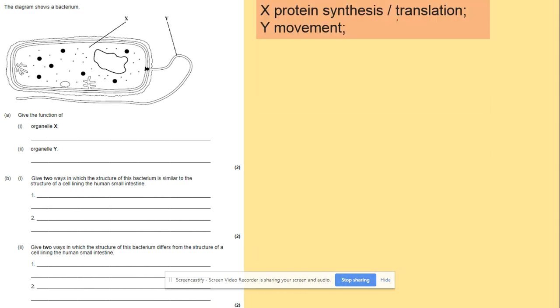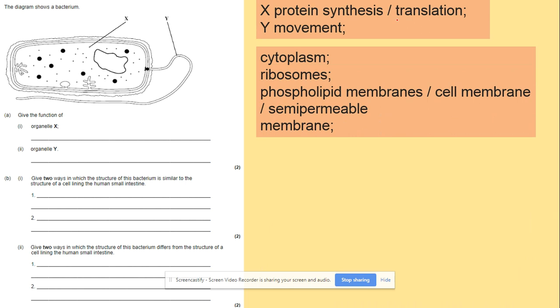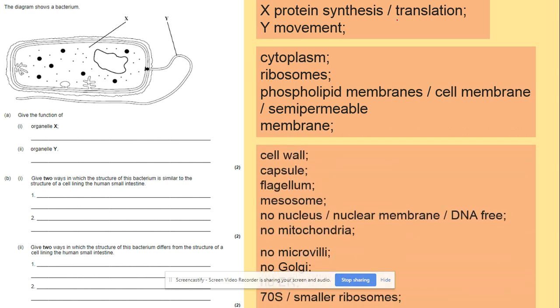So here we've got the bacteria and you need to give the function of organelle X and Y. X is looking at the ribosomes, so protein synthesis. Y is flagellum, so movement. Give two ways in which the structure of this bacterium is similar to the cell of a lining in the human small intestine. So again you're just comparing those two. What's the similarity? Cytoplasm, ribosomes, phospholipid membrane. Those things we're going to have in common.